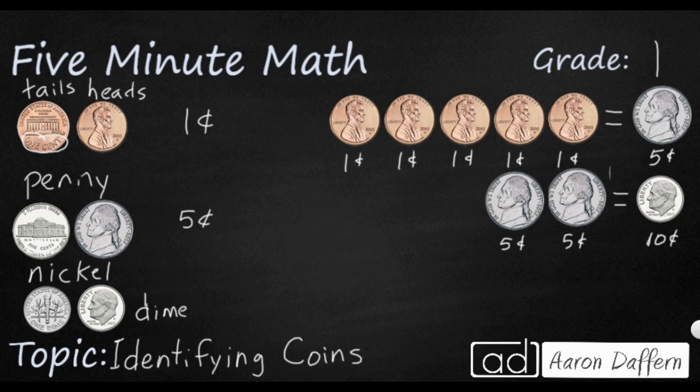It also has an American president on the head side, and that is Franklin D. Roosevelt. He was our 32nd president, but on the back, it doesn't say how many cents it's worth, like the penny and the nickel. On the back, it just says its name. It just says one dime. And it has a picture of an olive branch, a torch, and an oak branch.